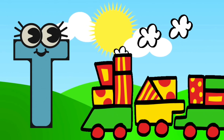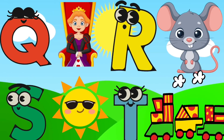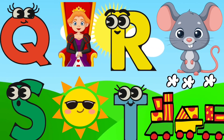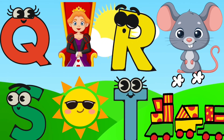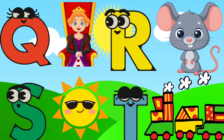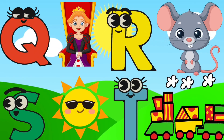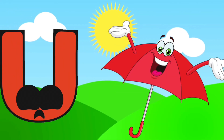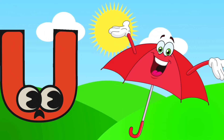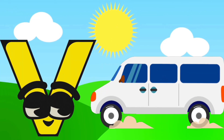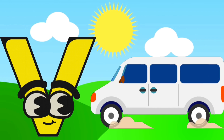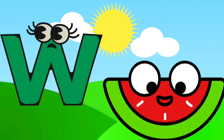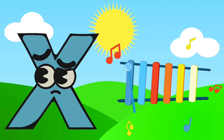U is for umbrella, u-u-umbrella. V is for van, v-v-van. W is for watermelon, w-w-w-watermelon. X is for xylophone, x-x-xylophone.